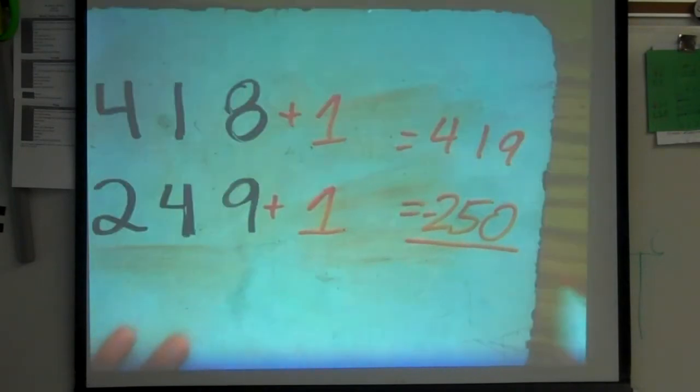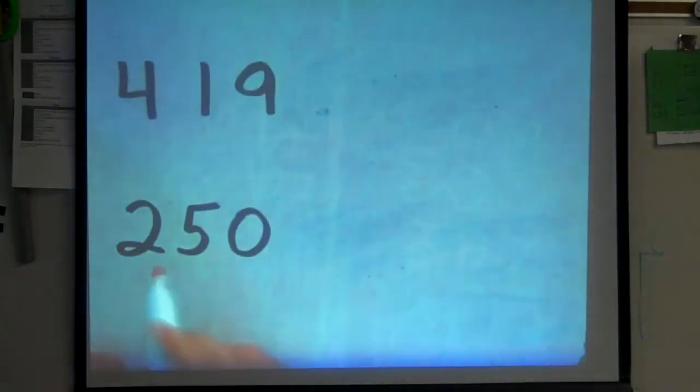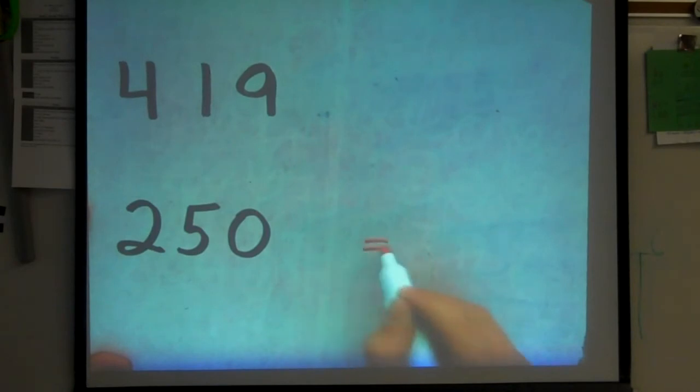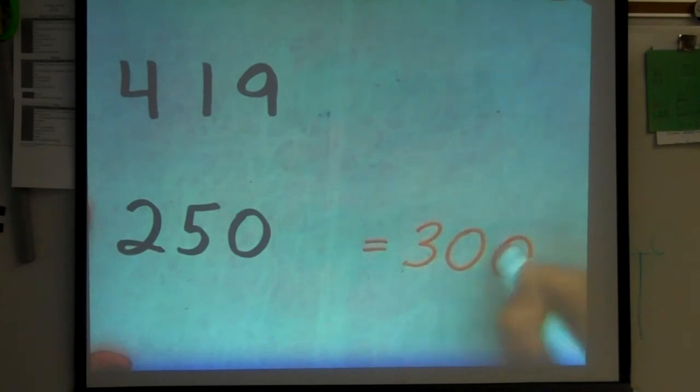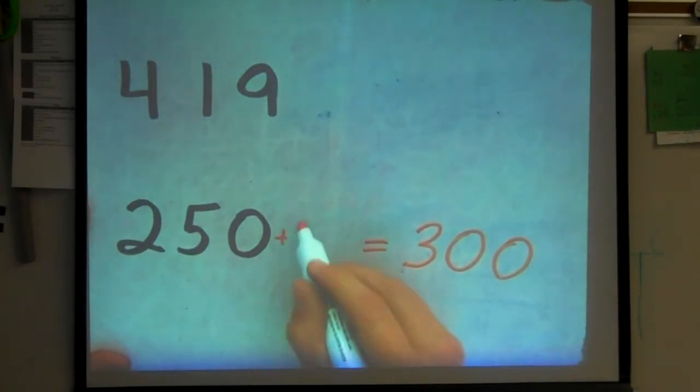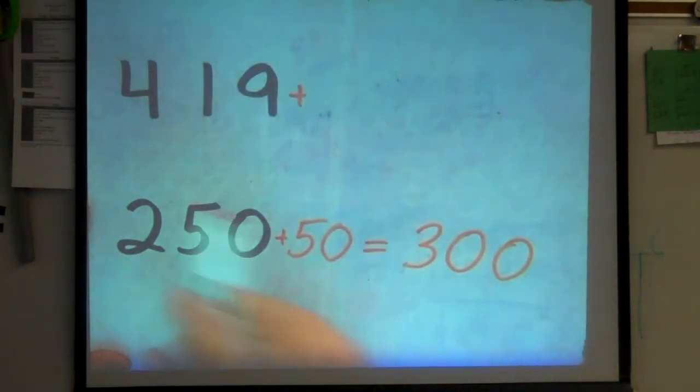So, now I'm looking at 419 minus 250. I still don't have all the big numbers on top. So, we found their friendly numbers for the tens. Let's find their friendly numbers for the hundreds. I tell the guys to look at their bottom number. What's the hundreds friendly number that comes next? They know the next 100 after 200 is 300.